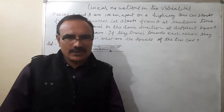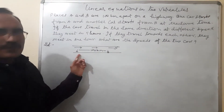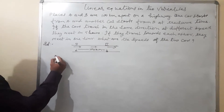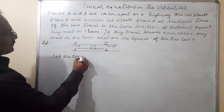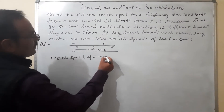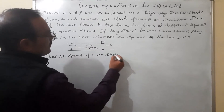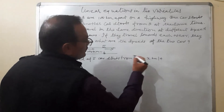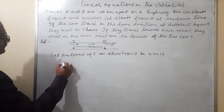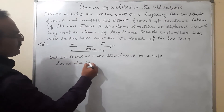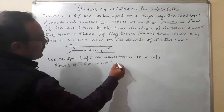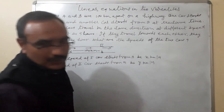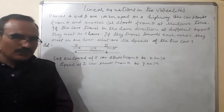We need to find their speeds. Let the speed of the first car starting from A be x km per hour and the speed of the second car starting from B be y km per hour.